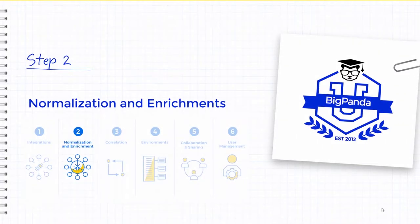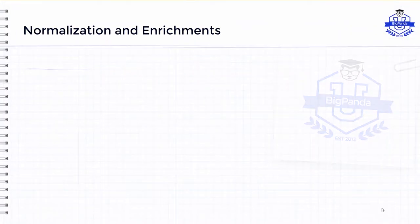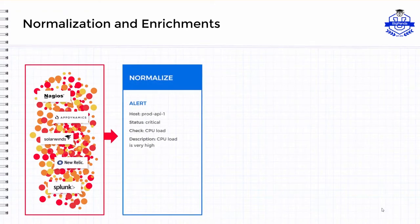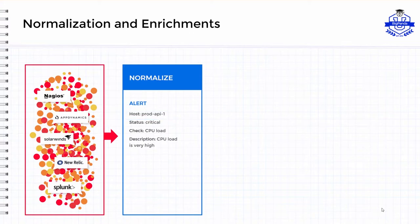The second step we'll discuss is Normalization and Enrichment. BigPanda ingests raw event data from monitoring and change systems. Before it is correlated into incidents, the data is normalized into a standard format and enriched with contextual information. Normalization is the process of converting raw data into standardized key-value pairs, called tags. Monitoring and change tools do not follow a consistent naming convention for key-value pairs. For example, tools may use different values to represent a device, such as hostname, node, or instance. BigPanda will normalize this to host. Standardizing tags in this way creates consistency across tools and facilitates cross-source correlation of events.